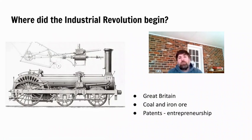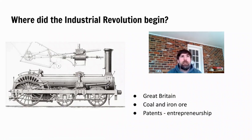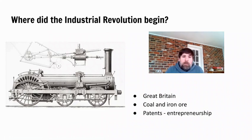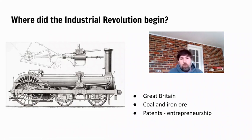Another reason why the Industrial Revolution happened in Great Britain is because the British Parliament passed lots of laws that promoted entrepreneurship. An entrepreneur is somebody who creates a business — someone who comes up with an idea to make money. One of the key things was patent law. A patent is a piece of paper that says you own an idea and get paid when people use it. Because patents were available, many people in Great Britain were motivated to invent things, knowing that a good idea could make them rich. So patents promoted invention and entrepreneurship.